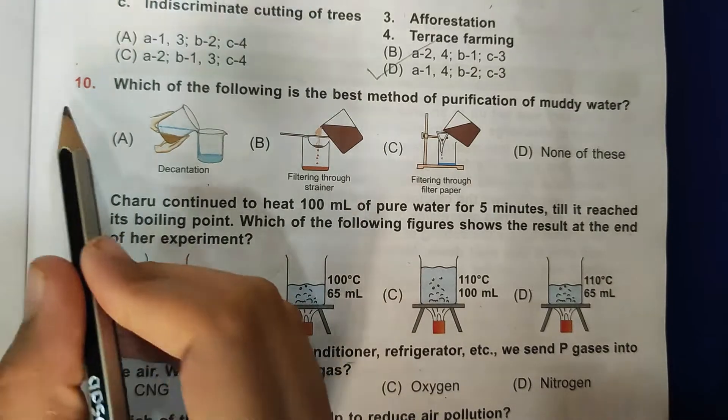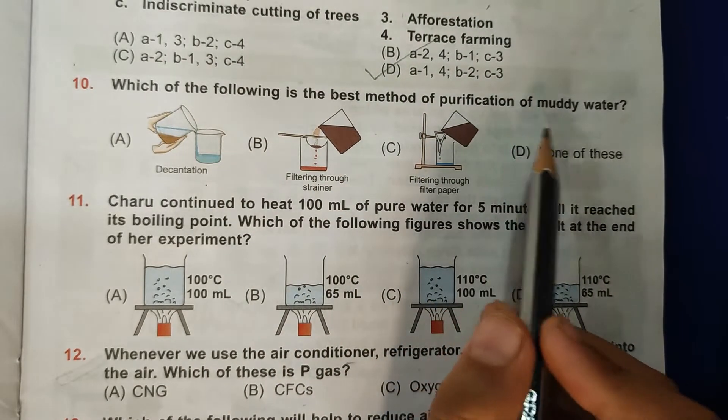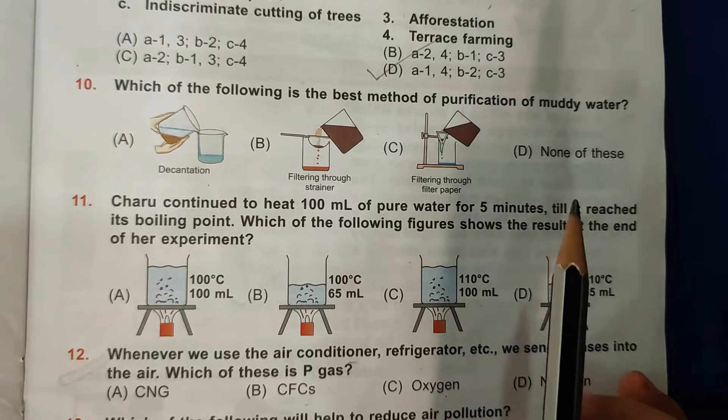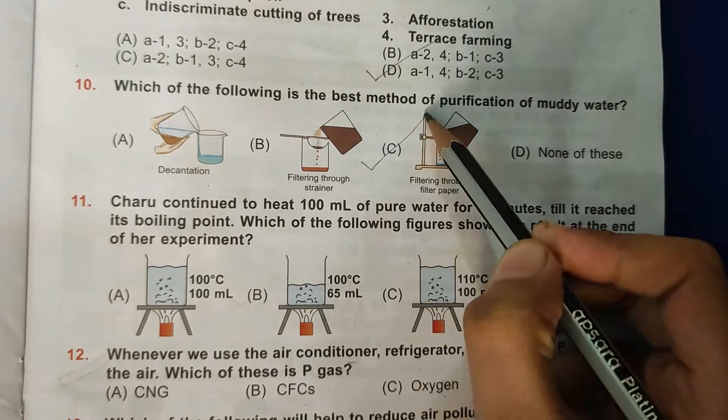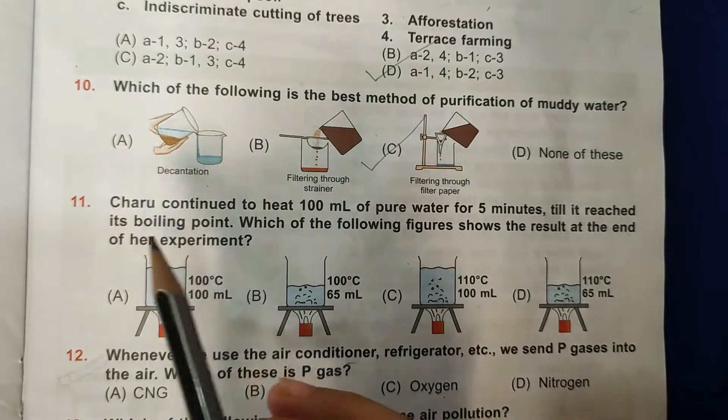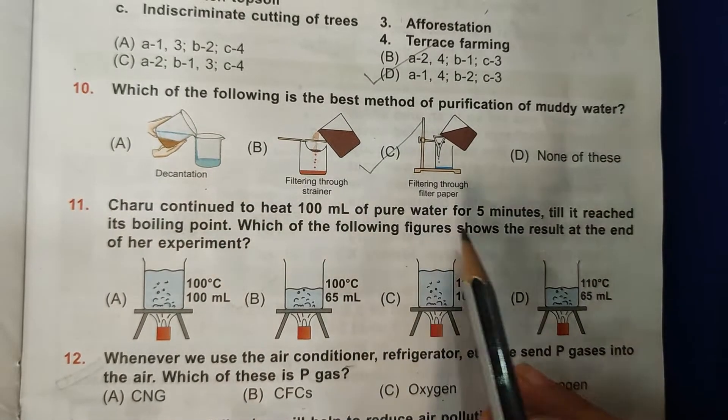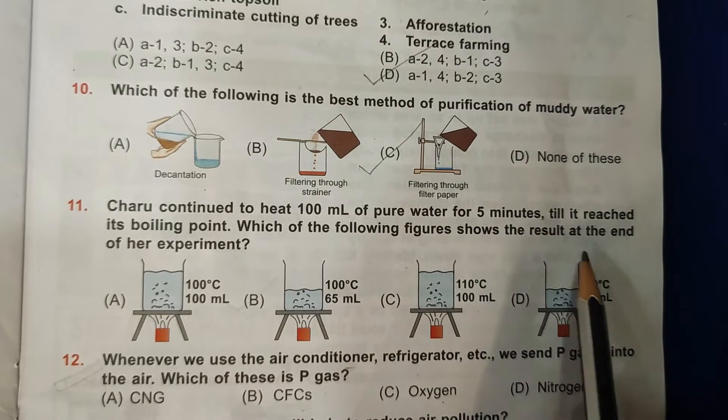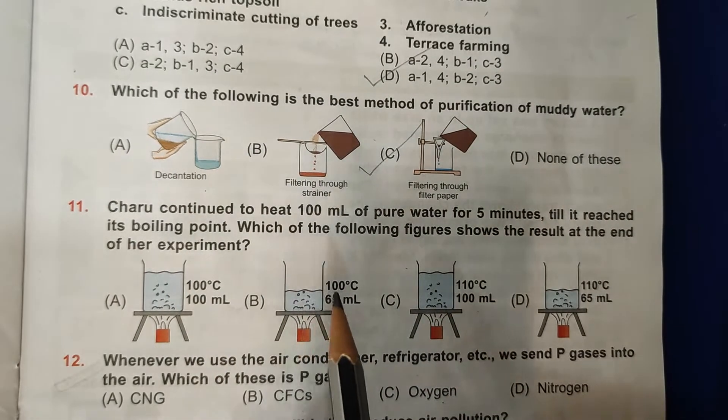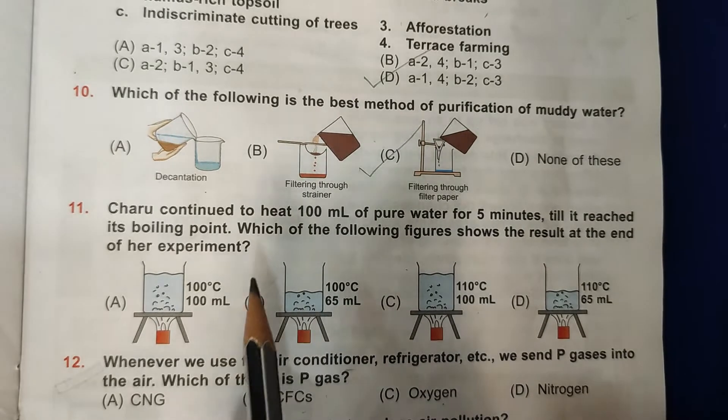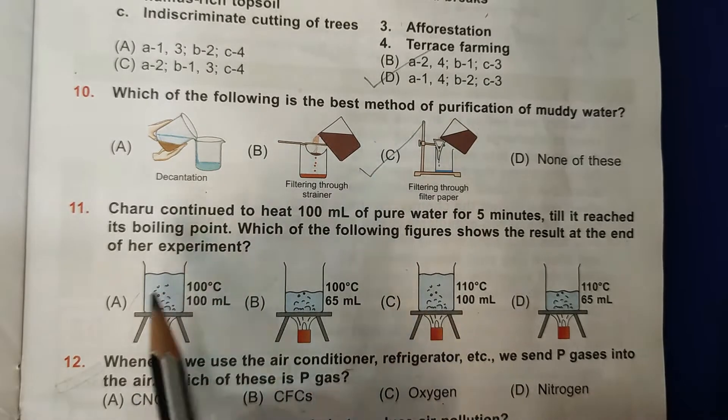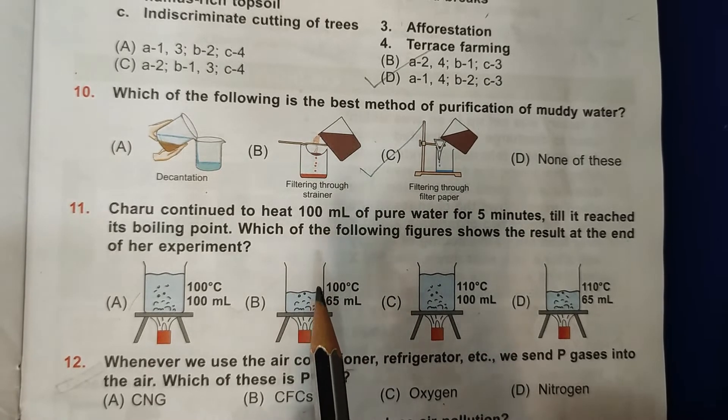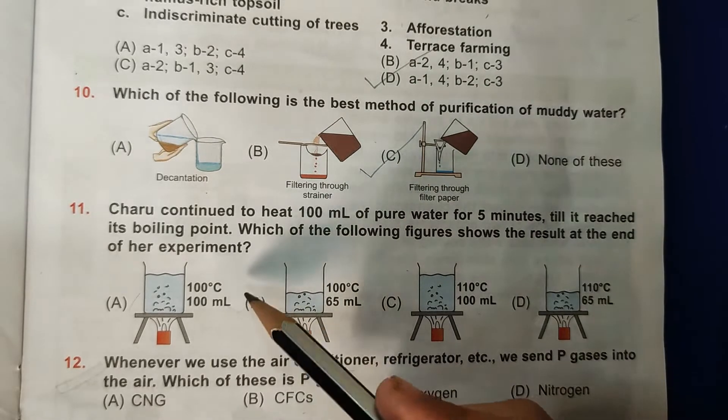Then C: Indiscriminate cutting of trees, so it is 3, afforestation. So this is the correct answer. Then question 10: Which of the following is the best method of purification of muddy water? Best method of purification for muddy water is filtering through filter paper, so this is the correct answer. Then 11th question: Charu continued to heat 100 ml of pure water for five minutes till it reaches its boiling point. The boiling point of water is 100 degrees Celsius, so option must be from A or B.